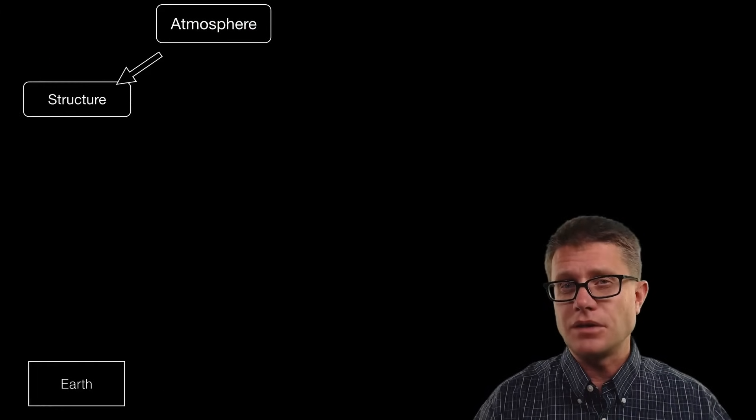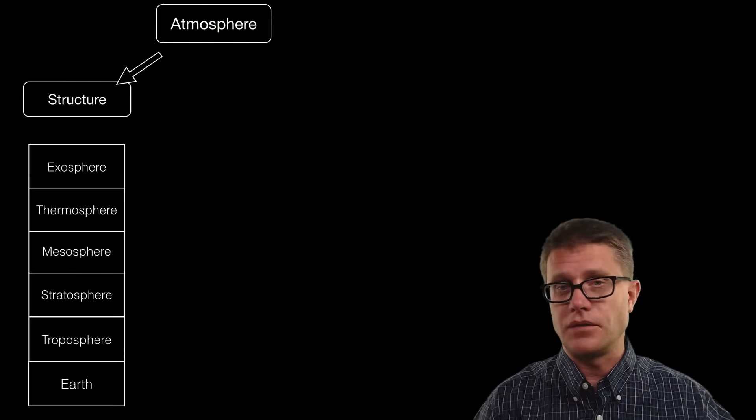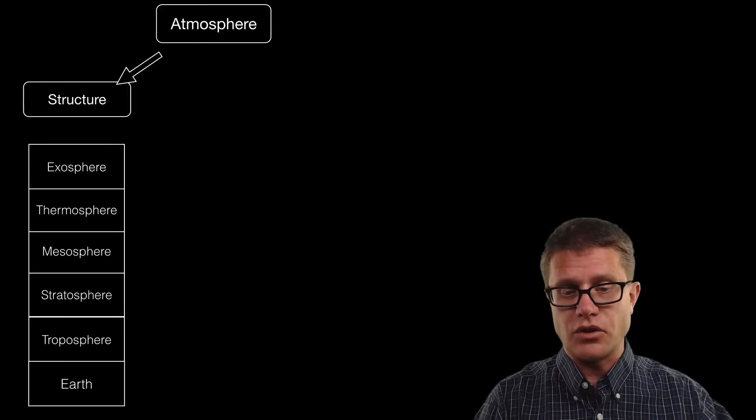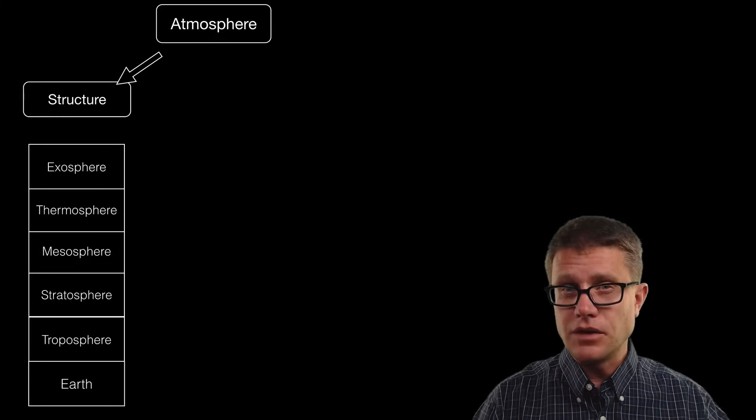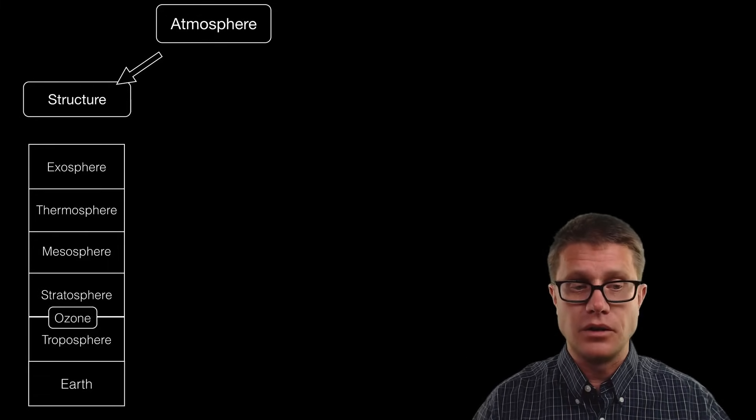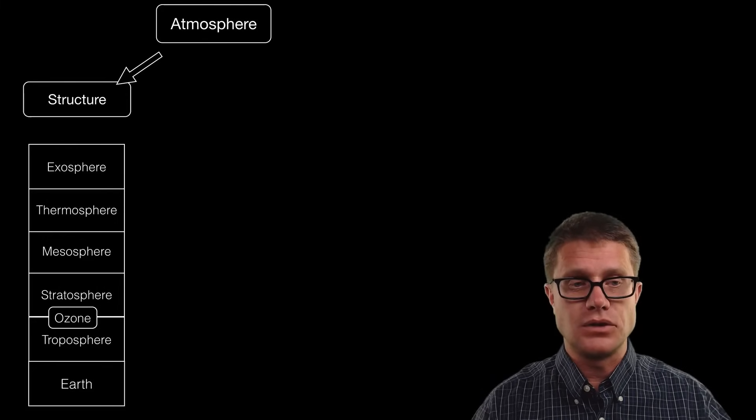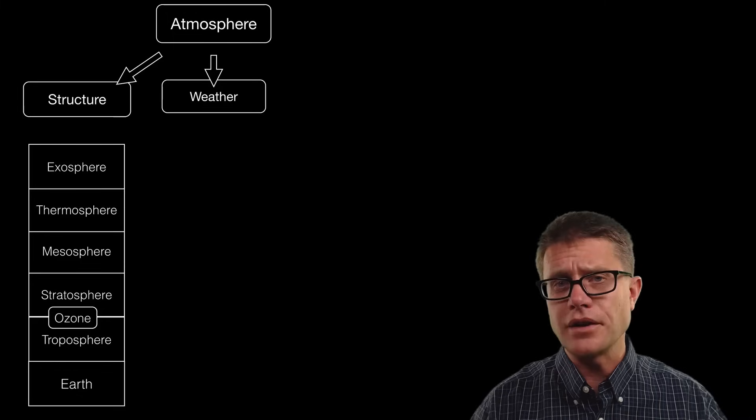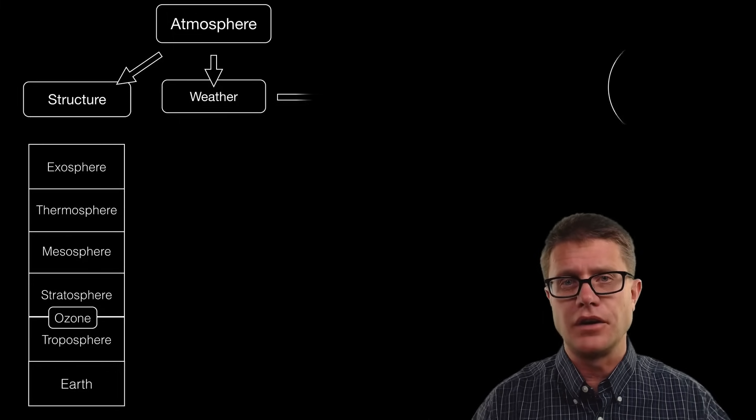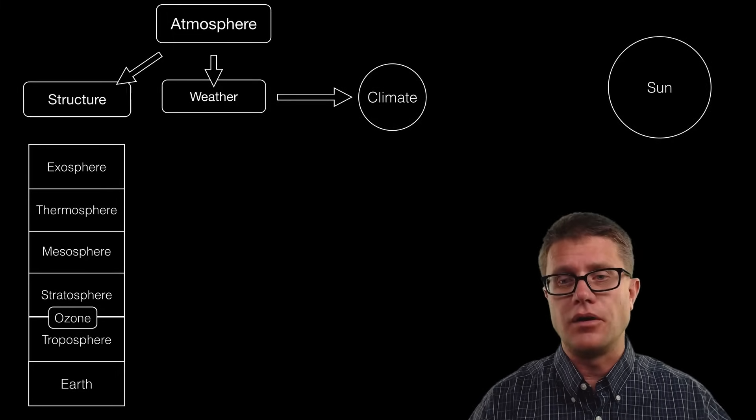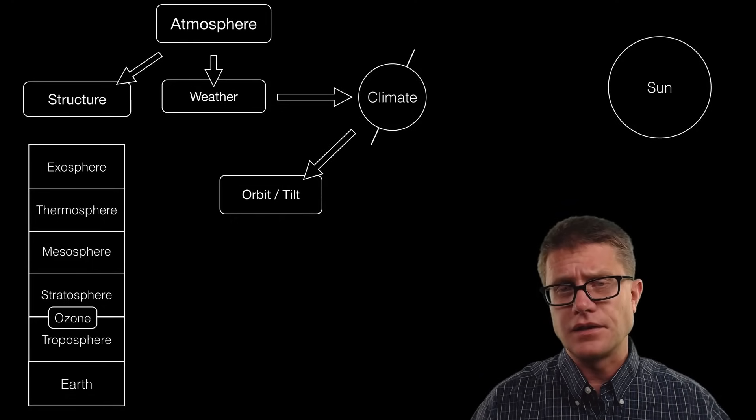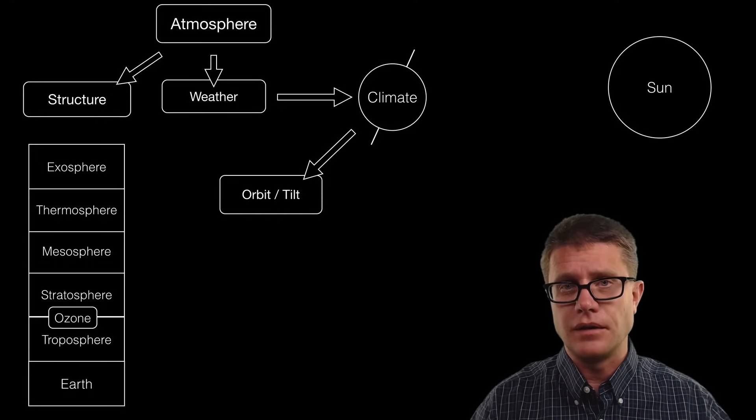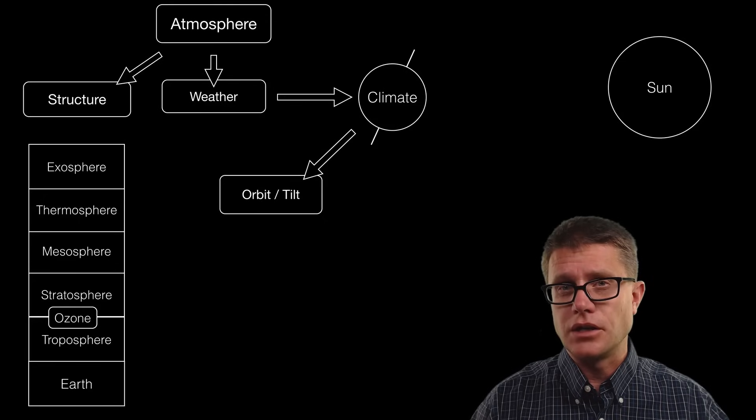The atmosphere surrounds the earth. Scientists break it into a number of different spheres: troposphere, stratosphere, mesosphere, thermosphere and exosphere. We live in the troposphere and that protective ozone is found right at this boundary between the two. Weather is the current state of our atmosphere, and over a long period of time we call that climate, which is due to the tilt of our axis and where we are in the orbit around the sun.